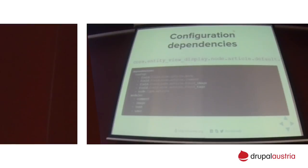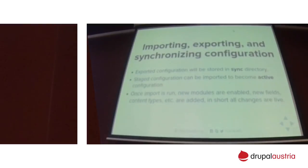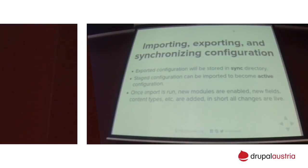Configuration objects can have dependencies. For example, the view display for the node article depends on the fields, which depend on the content type, and it also depends on the module. When you import configuration, all dependencies are checked to ensure they're met. When the import runs, all hooks run as well and fields are added. Because of the dependency system, Drupal knows in which order it has to add the configuration.